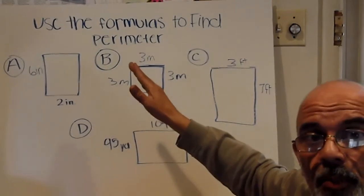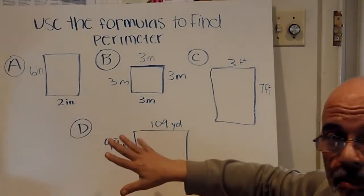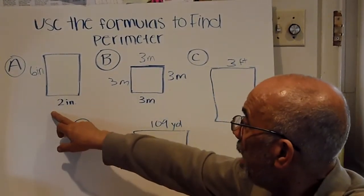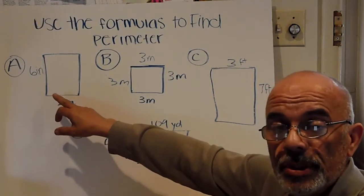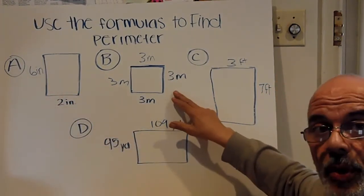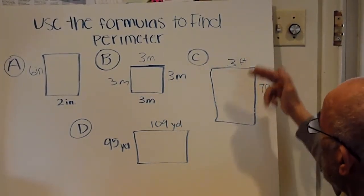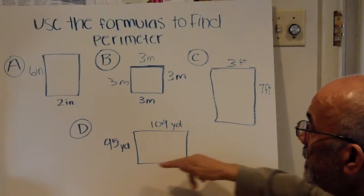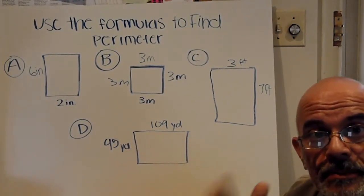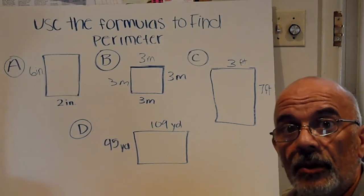Here we have a couple more problems. Use the formulas to find the answer to these problems. Remember, a rectangle: two times length plus two times width. A square: four times one side. Here we have another rectangle, and another rectangle. Remember today we're learning how to find the perimeter of a rectangle using a formula.